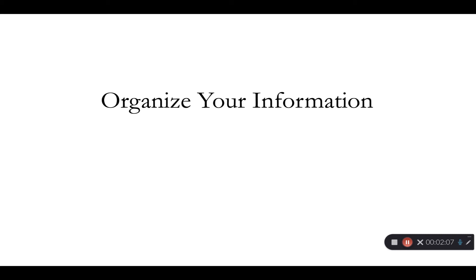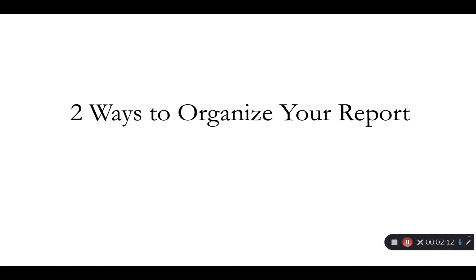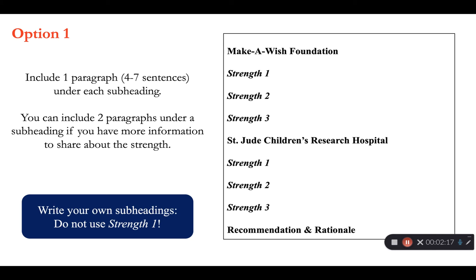It is your job as the writer to organize the evidence from your research summary to create a persuasive argument. There are two ways to organize your report. In option one, you will cover information about each organization separately. Your first heading is the name of a nonprofit, and you will write three persuasive subheadings to show the strengths of that organization. Each subheading should highlight a reason your reader should select this nonprofit for the CSR initiative. Your second heading is the name of the other nonprofit, also with three subheadings to show its strengths.